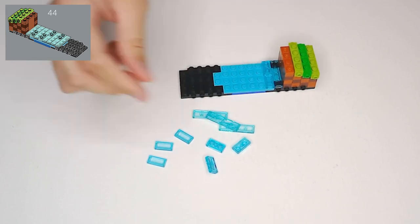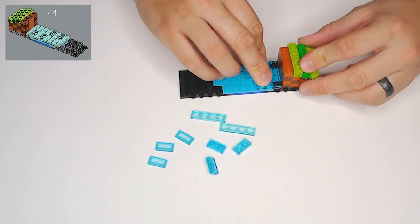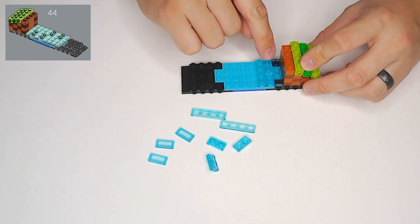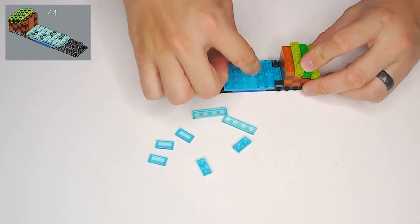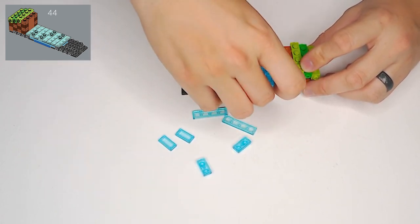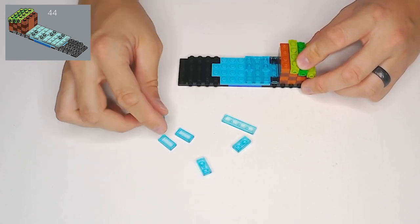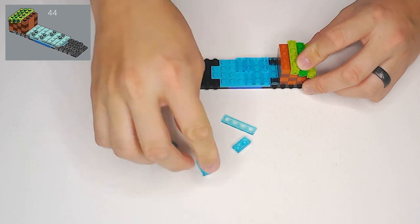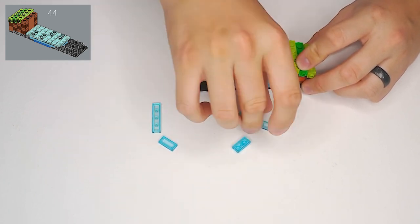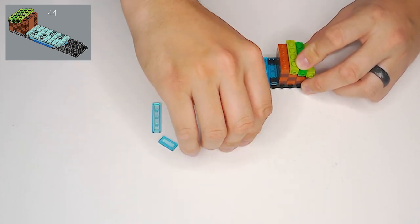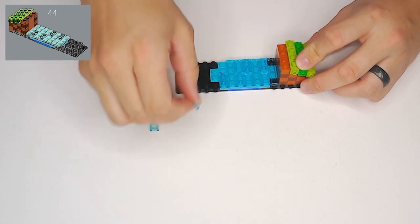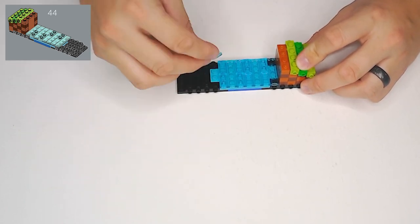And then, we're going to go with another 1x4. Then, we're going to go with the same orientation where we have studs on the top and tile on the bottom. Then, we're going to go with another 1x2. And we're going to alternate where the tile is on the top and studs on the bottom. Then, 1x4. And then, studs on the top and tile on the bottom again.